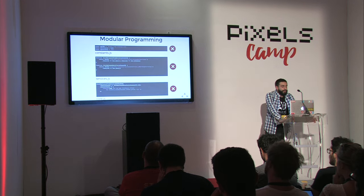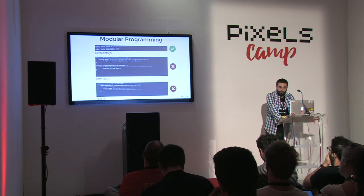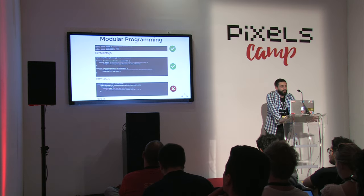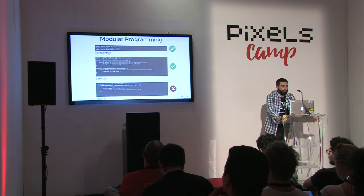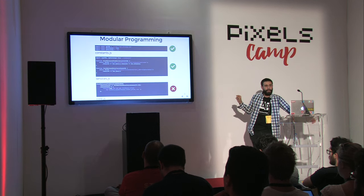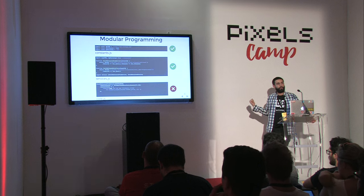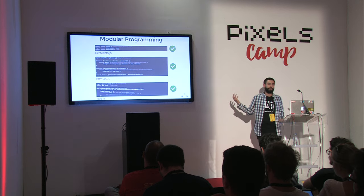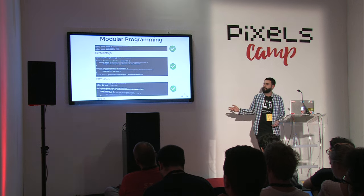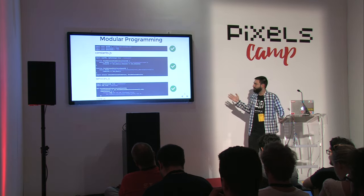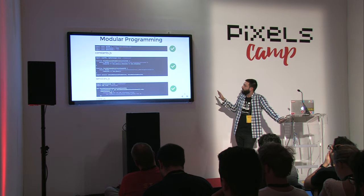ES6 modular programming solves this. In `constants.js`, instead of just defining constants, you `export` them. In `services.js` you write `import { CONSTANT_A, CONSTANT_B } from './constants'` at the top, then `export` the service functions. In `core.js` you `import` the specific variable from constants and `import * as api from './services'`, then call `api.functionName()`. The dependencies are now explicit in the code itself.